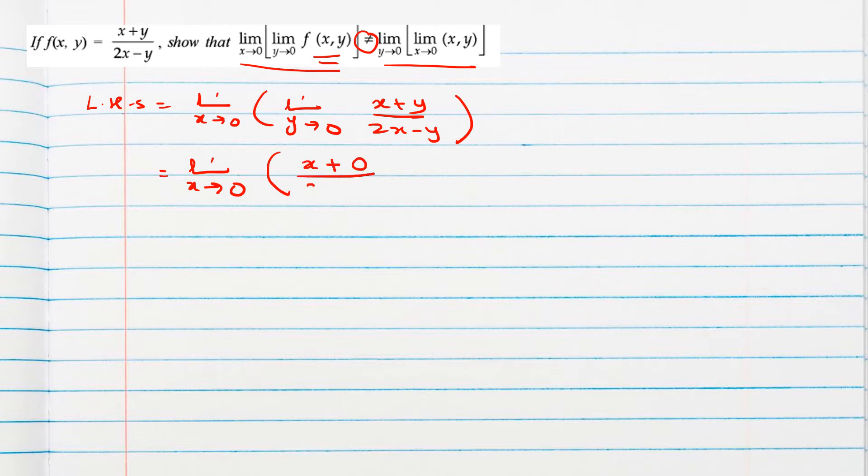Our function becomes (x+0)/(2x-0), so finally we get x/2x. The x's cancel, giving 1/2. The limit of the constant function 1/2 is 1/2. Let this be equation 1.